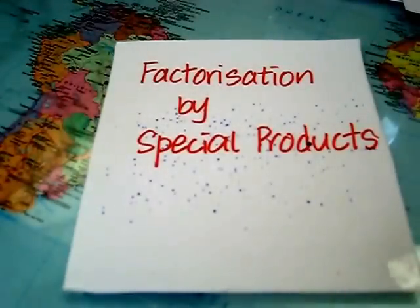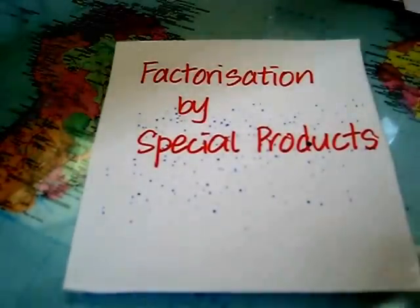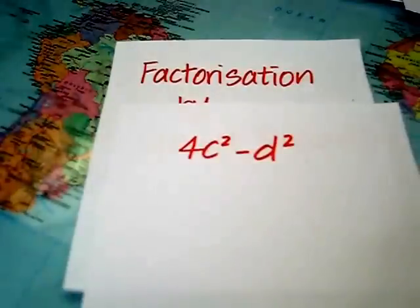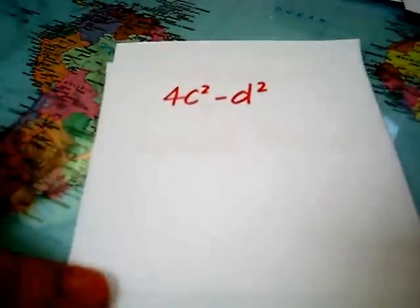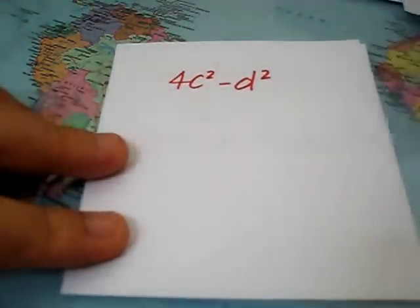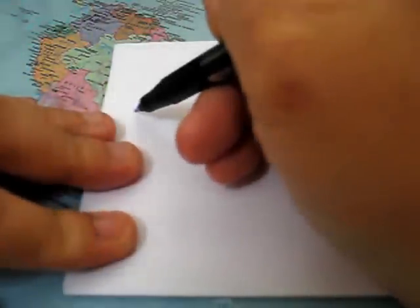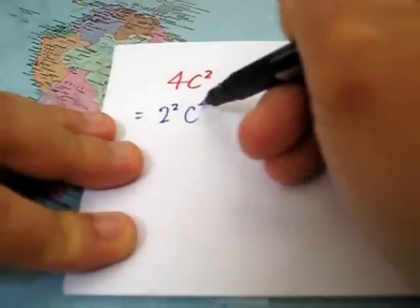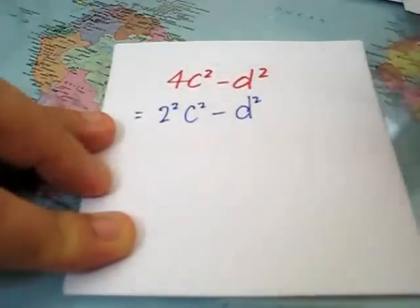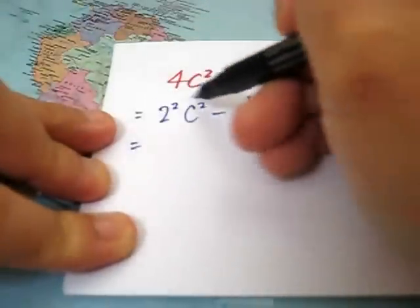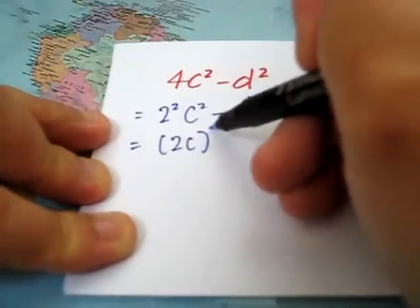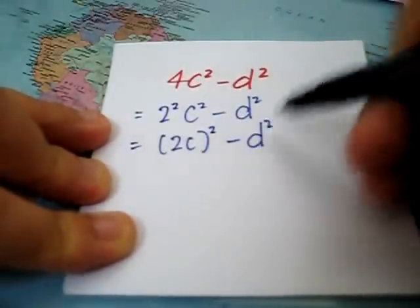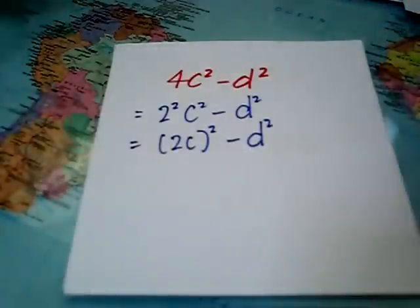Let's look at the first one. 4c square minus d square. Now, 4 is a square number. So I can rewrite 4 as 2 square. And this part, we can rewrite it in this form. Now, let's do a comparison.